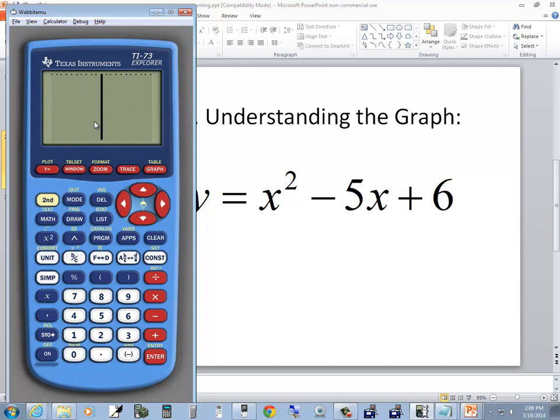Now my zoom is already screwed up, so I'm going to show you how to fix it to begin with. I'll do zoom, and then you're going to choose Z-standard, so I'll do 6. This gives us our standard viewing window.